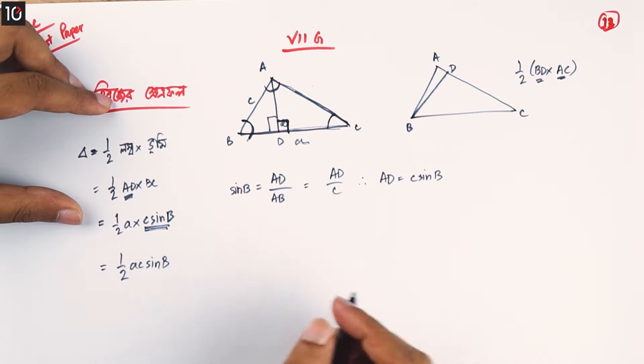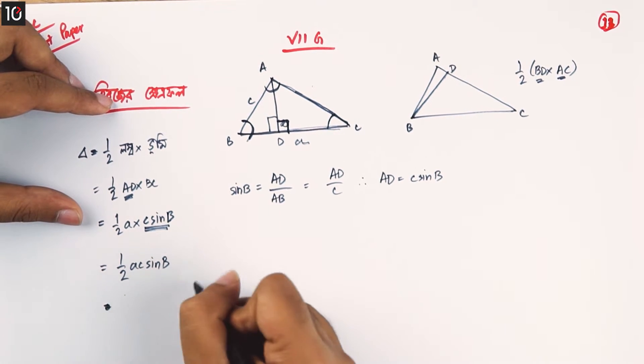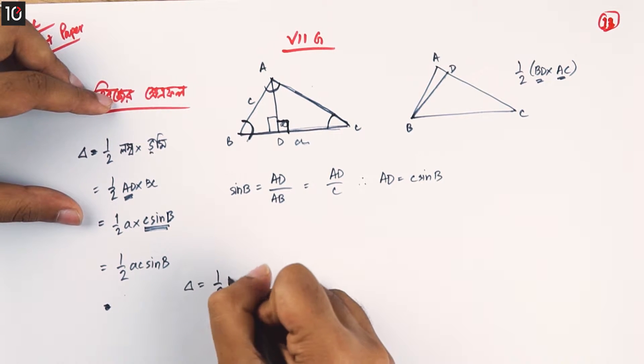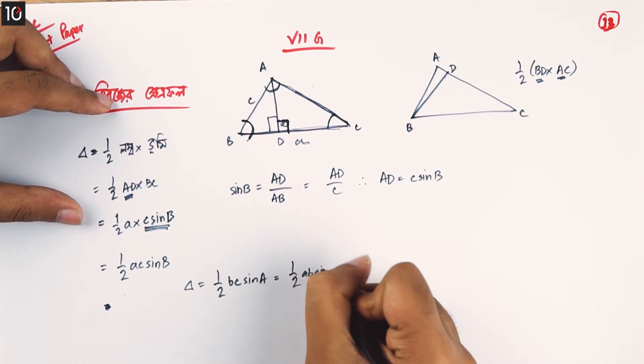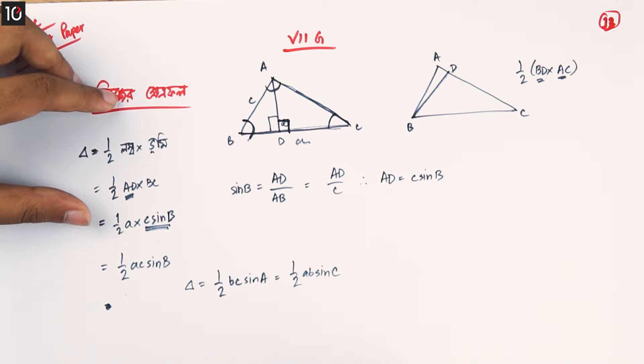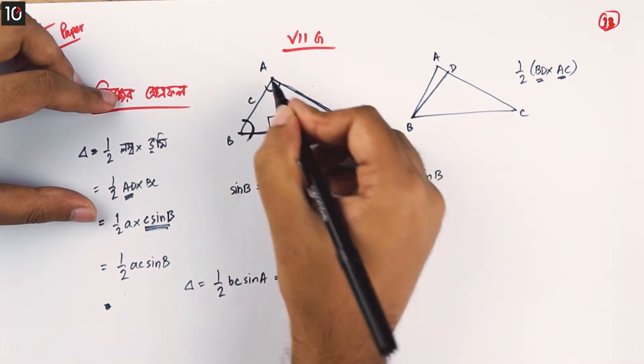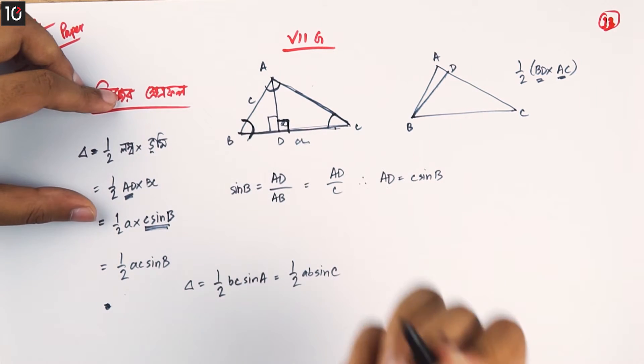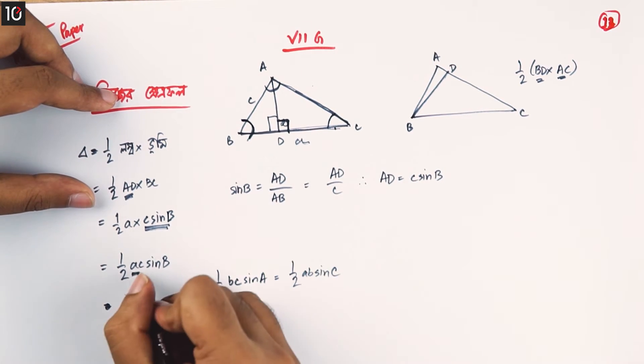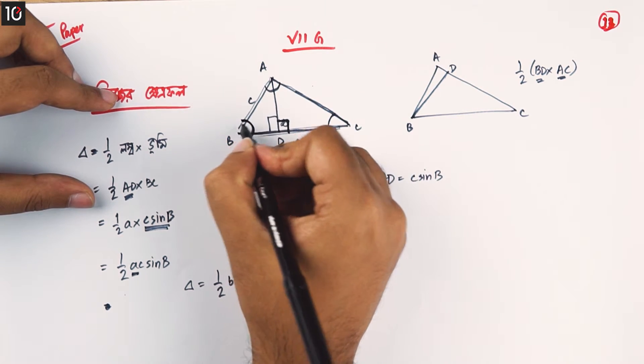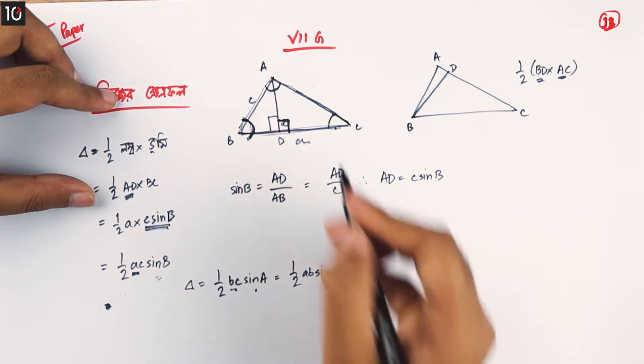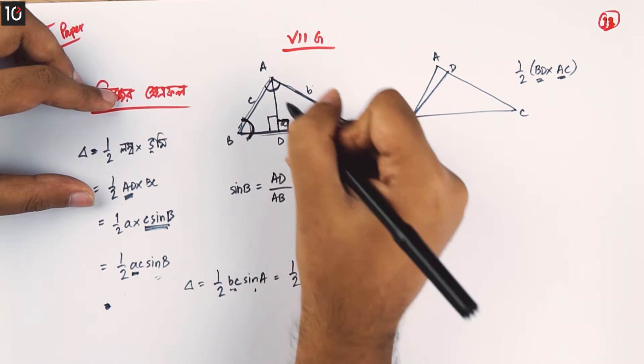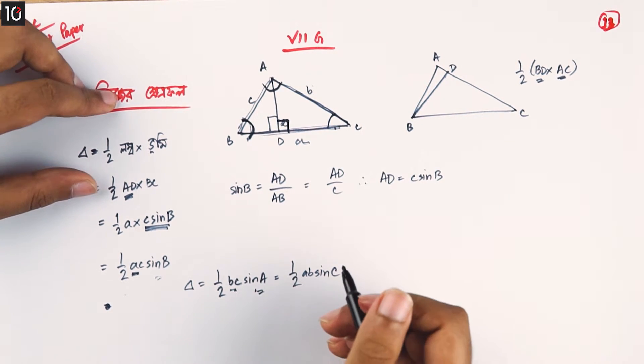So what do we need to do? That is, half into BC sin A equal to half into AB sin C. We need to plan for this form, BC to bid. How we need to bid A sin A.